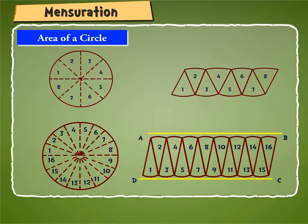So if you look at the figure ABCD, it looks like a parallelogram whose one side is equal to half the circumference of the given circle and the other side is its radius.